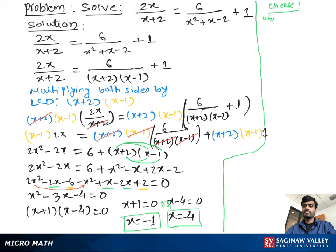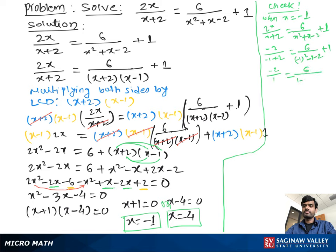To check, we write the problem again. When x is equal to negative 1: 2x over x plus 2 equals 6 over x squared plus x minus 2, plus 1. Substituting x equals negative 1: negative 2 over 1 equals 6 over 1 minus 1 minus 2, plus 1. We get negative 2 equals 6 over negative 2 plus 1, which is negative 3 plus 1, giving negative 2 equals negative 2. ✓